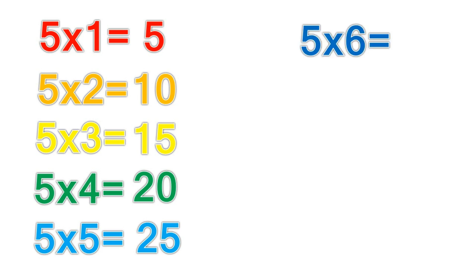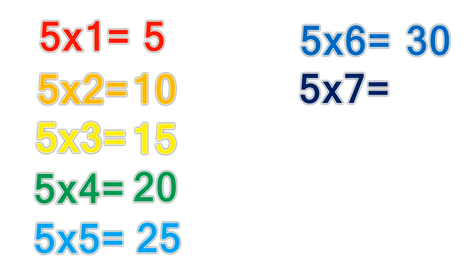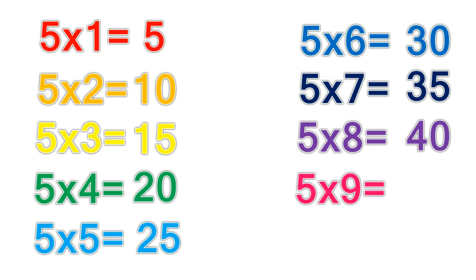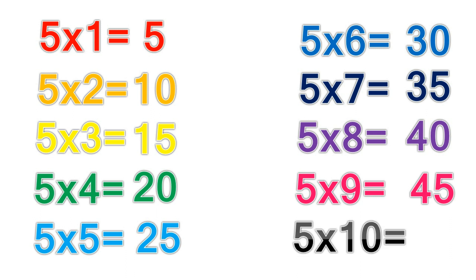5 times 6 equals 30. 5 times 7 equals 35. 5 times 8 equals 40. 5 times 9 equals 45. 5 times 10 equals 50.